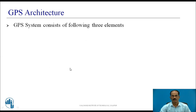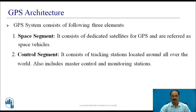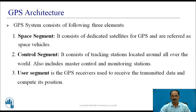The GPS system consists of the following three elements. First is the space segment, which consists of dedicated satellites for GPS, referred to as space vehicles. Second is the control segment, which consists of tracking stations located all over the world, and includes master control and monitoring stations used to control and monitor the satellites. The third is the user segment — the GPS receiver used to receive the transmitted data and compute its position. This is where the GPS receiver's position is found.